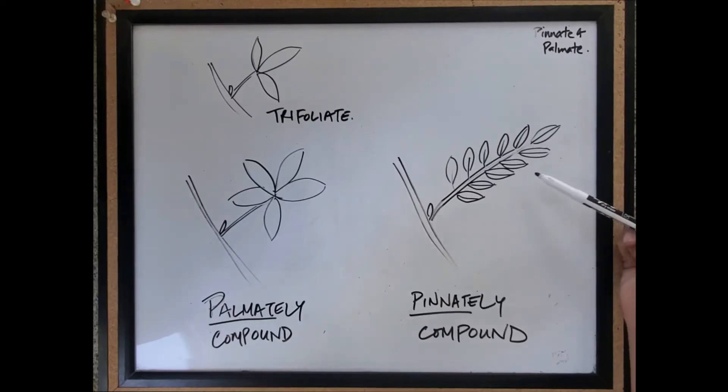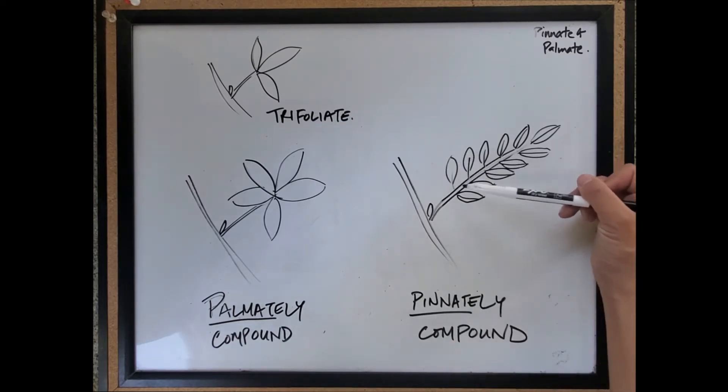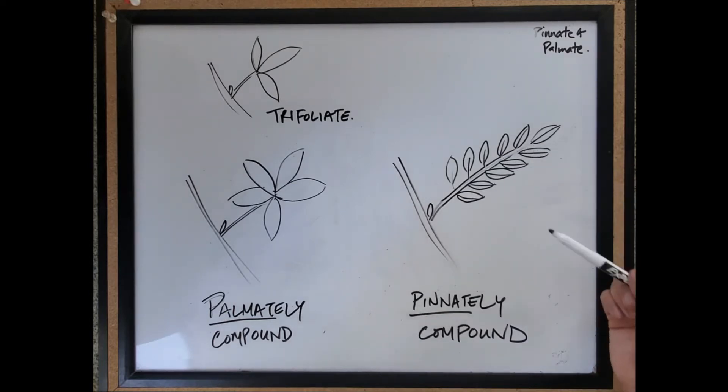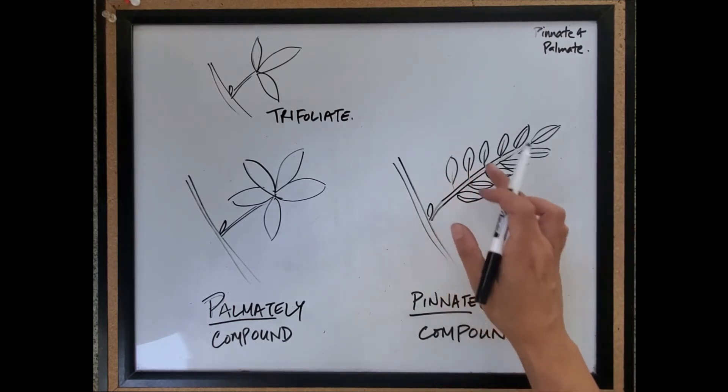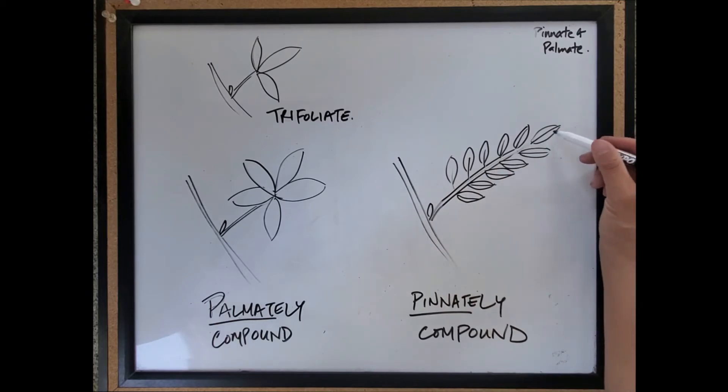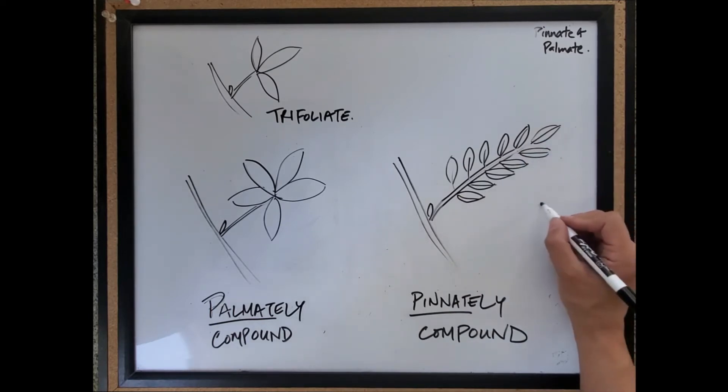This compound leaf that we were just looking at is what's called a pinnately compound leaf. Pinnate refers to the attachment of these leaflets at multiple points along this stalk. You can break this down further by the number of leaflets you have. In this case you have an odd number of leaflets because these are pairs and you have one extra one here. So this is an odd pinnate.